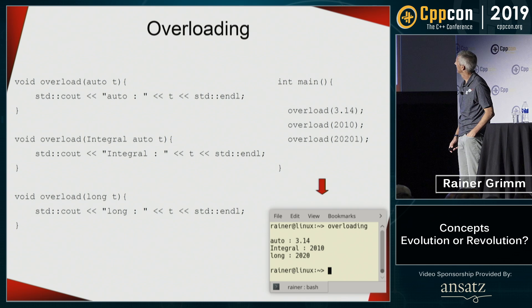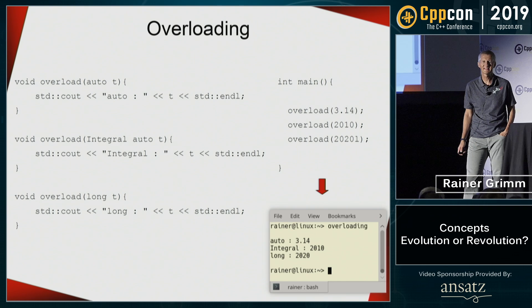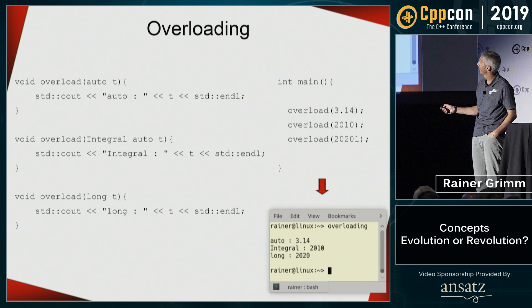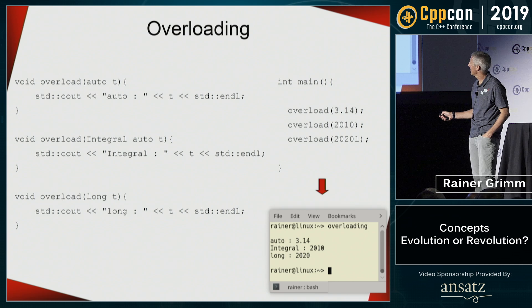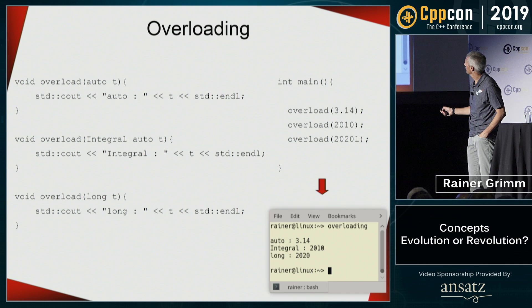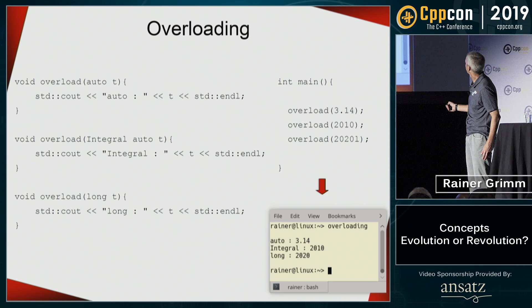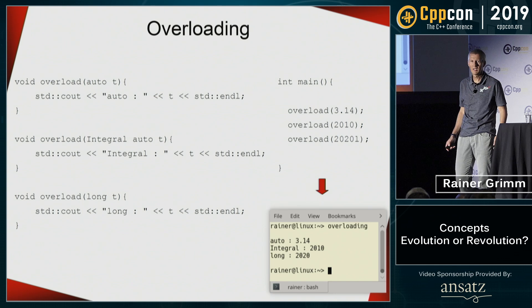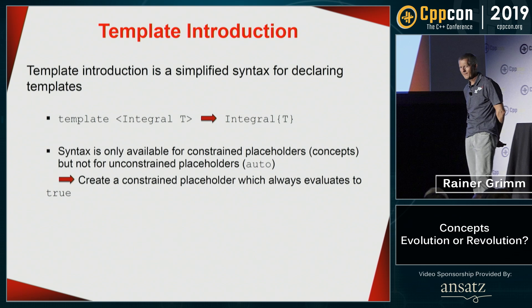One additional nice example: you can overload on concepts. I have the function overload written for unconstrained placeholder, for constrained placeholder, and for a concrete type. When invoked with a double literal, int literal, and long int literal, the correct overloads are chosen: double goes to auto (function template without constraints), int goes to the concept, and long goes to the concrete function. It just behaves the way it should.